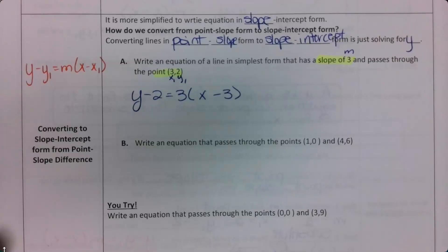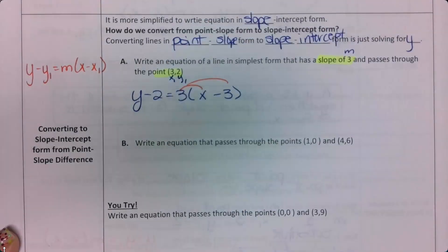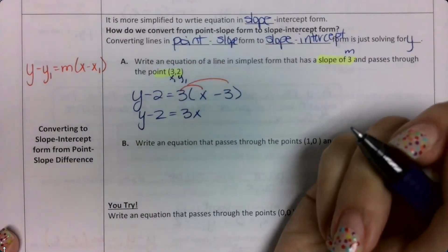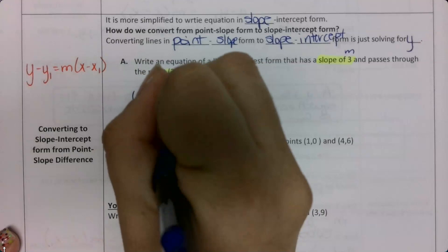Now I want this in slope-intercept form — y equals mx plus b. I need to get y alone. I'm going to distribute that 3. I still have y minus 2 on the left. 3 times x is 3x, and 3 times negative 3 is negative 9. Then I add 2 to both sides to get y alone.